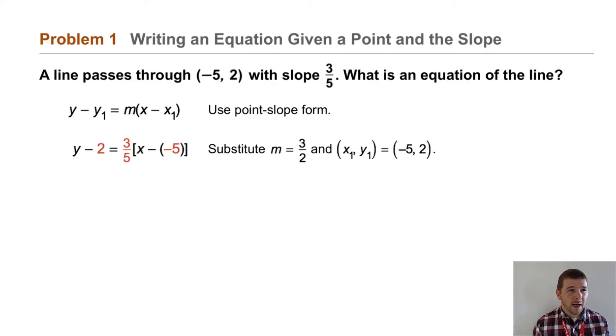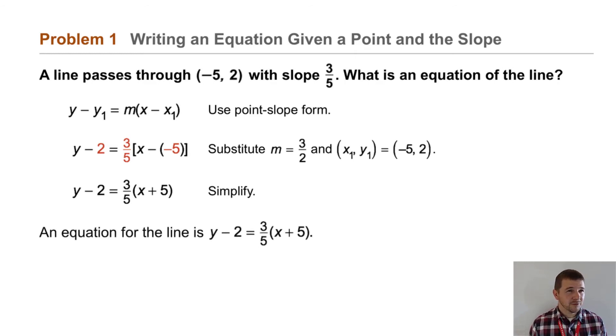Our equation becomes y - 2 = 3/5(x - (-5)). And then as we simplify, we rewrite this as y - 2 = 3/5(x + 5). Our equation for the line is y - 2 = 3/5(x + 5).